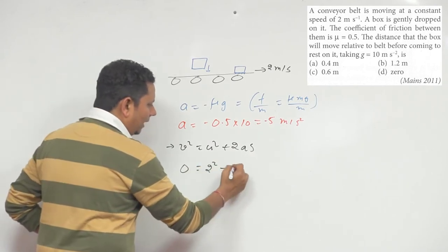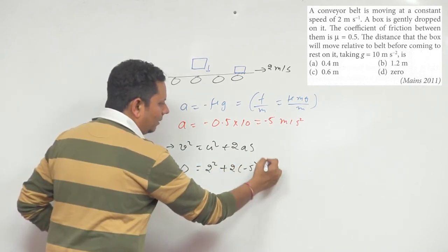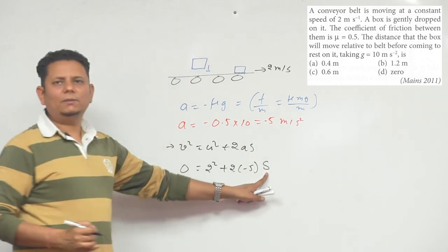So 0 equals 2 square plus 2 times minus 5 times s. We need to find this s value.